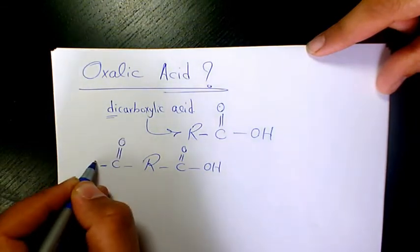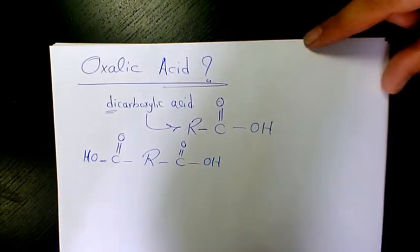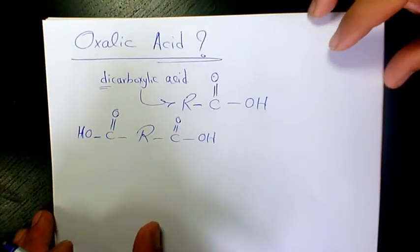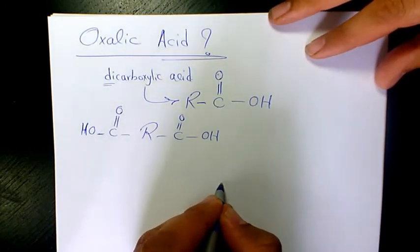Two carboxylic functional groups from both sides of the compound. So the simplest dicarboxylic acid is like that.